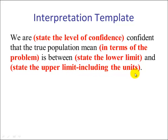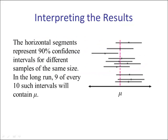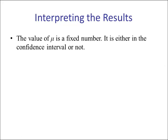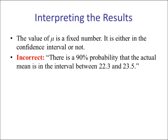Let's look at a visual. The horizontal segments represent 90% confidence intervals for different samples of the same size. In the long run, 9 of every 10 such intervals will contain mu. Things to keep in mind when interpreting results: the value of mu is a fixed number — it is either in the confidence interval or it's not.